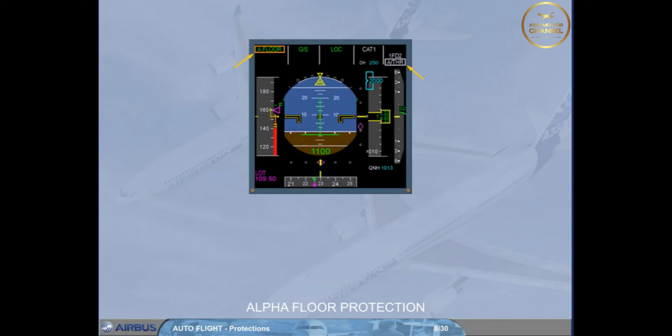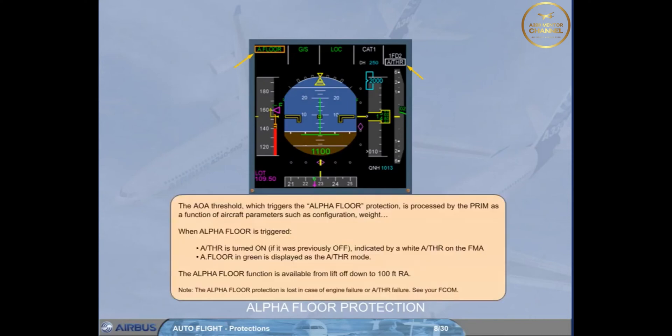The alpha floor function is available from lift-off down to 100 ft radio altimeter. Note: the alpha floor protection is lost in case of engine failure or autothrust failure. See your FCOM.